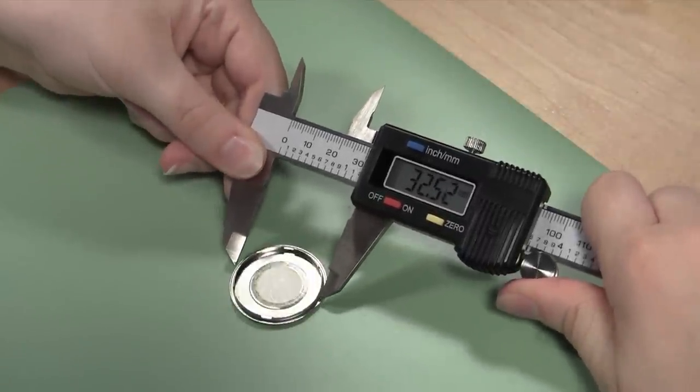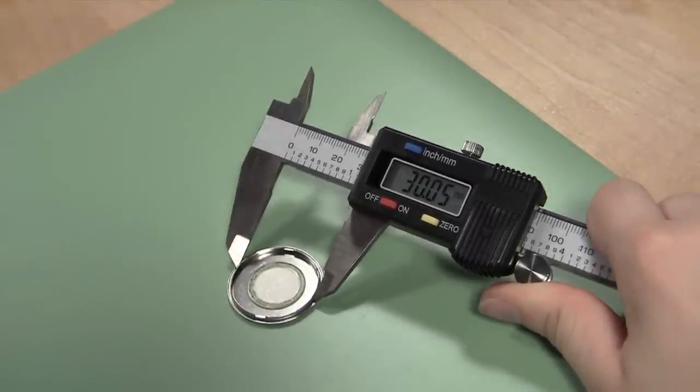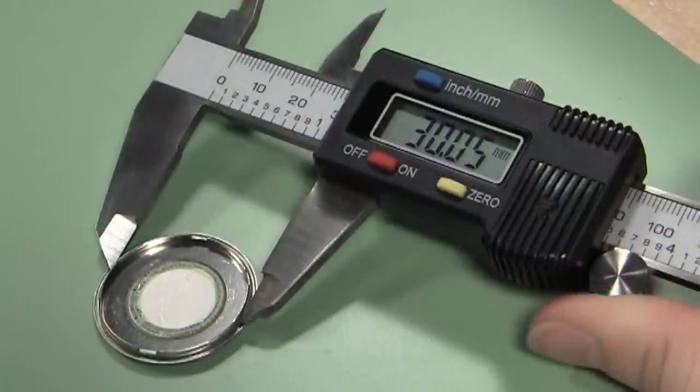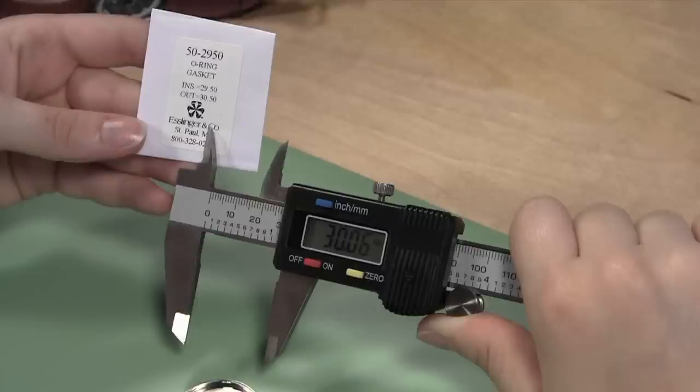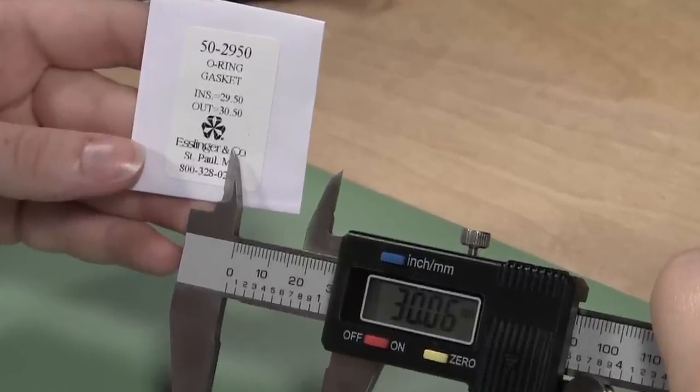Then, using a digital gauge to get accurate measurement, measure the outside diameter of the inside lip on the gasket where the old gasket was. This will get you the diameter you need for your new gasket. Be sure to order a gasket that is 0.1 mm smaller than the measured diameter to ensure a tight seal.